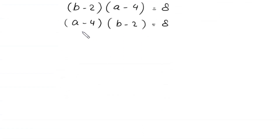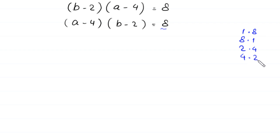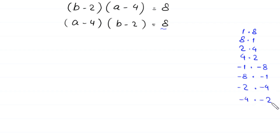Now we have a product of two factors on the left hand side, and 8 can be factorized as 1 times 8, or 8 times 1, 2 times 4, or 4 times 2, and negative 1 times negative 8, or negative 8 times negative 1, negative 2 times negative 4, and negative 4 times negative 2. So these give us case 1, case 2, case 3, and case 4.